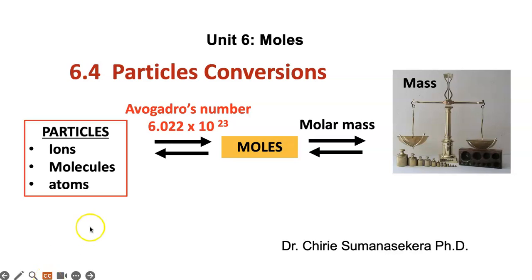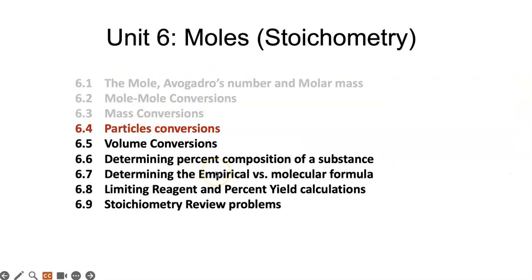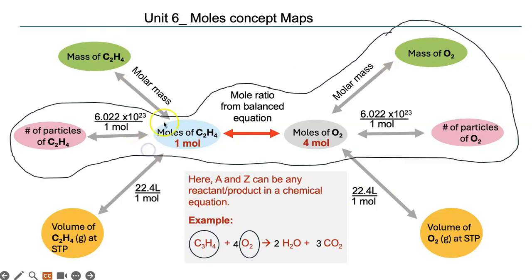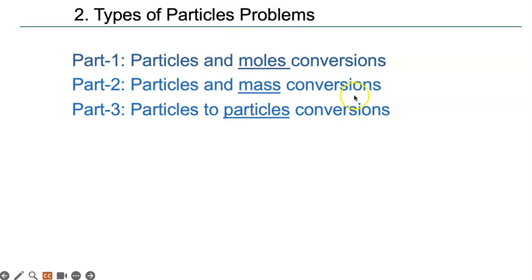Welcome to 6.4 Particle Conversions. We are going to convert particles of one thing into moles, mass, and the number of particles of another thing using Avogadro's number as equal to one mole. Here is where we are in the grand scheme of things. In our mole concept map, we are examining converting moles of one substance using the mole ratio in the balanced equation into mass, particles, and moles of another substance.